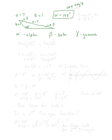The thing to realize is what makes this the ambiguous case — when do I know I have to check to make sure I might not have a second triangle possible? What causes this is that I'm only given one angle. The fact that I'm only given one angle is the thing that makes me say I have to check for two triangles.